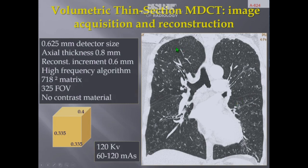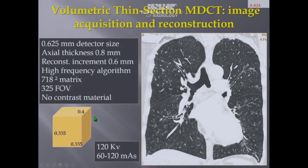A thin collimation acquisition over the entire lung during a single breath hold allows us to provide edge-overlapped high-resolution images. According to these acquisition and reconstruction parameters, we can obtain small voxels having cubic or almost cubic dimensions. This isotropic data may provide multi-planar reformations of high resolution in all directions, obtained with a reasonable and acceptable radiation dose.